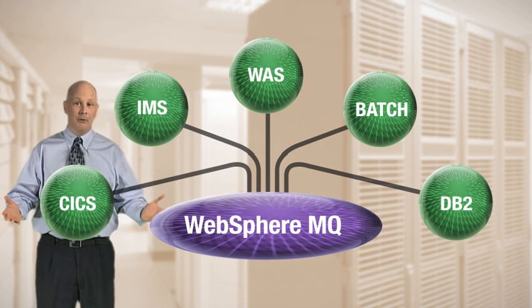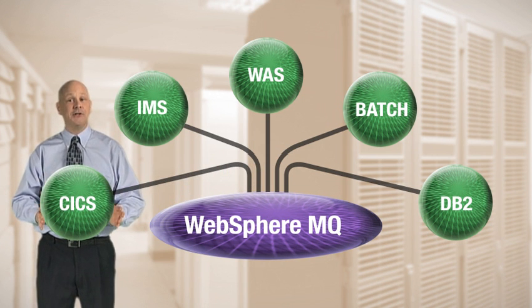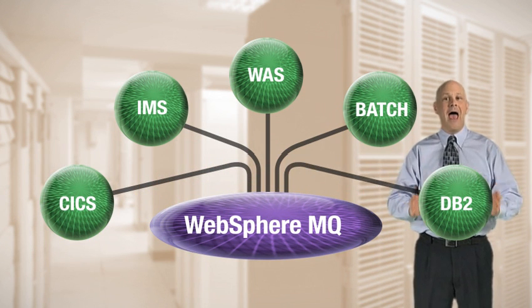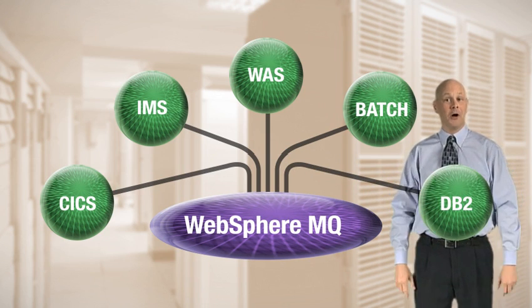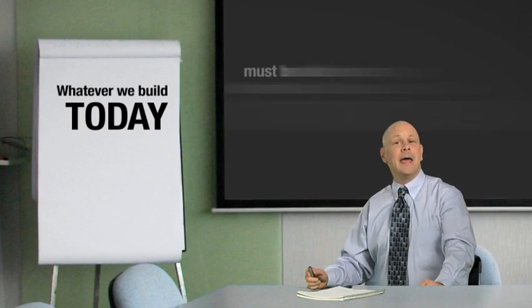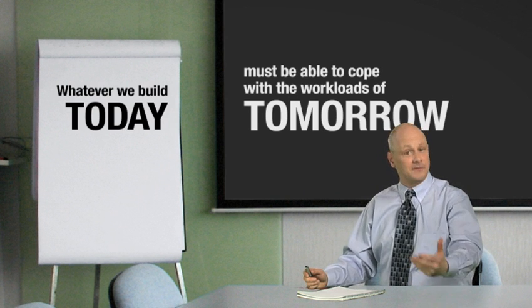For example, a CICS transaction can read an MQ message and update a DB2 row as a complete atomic action in one unit of work. Whatever we build today must be able to cope with the workloads of tomorrow.